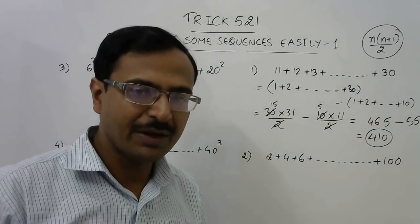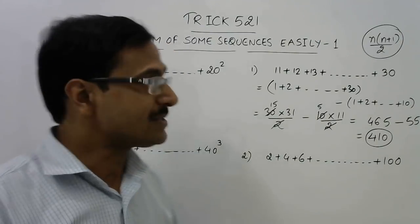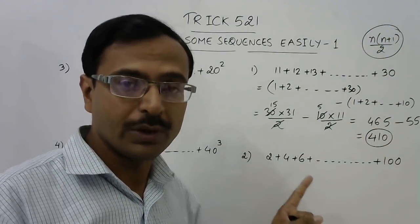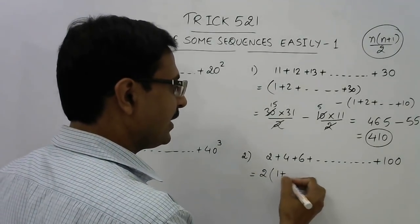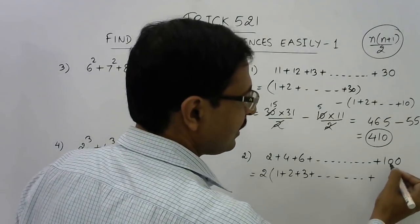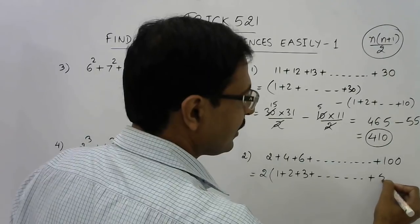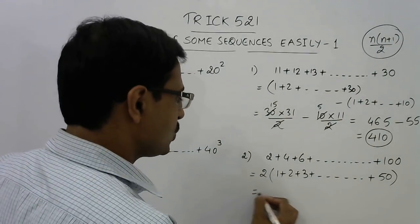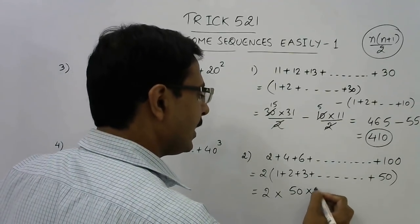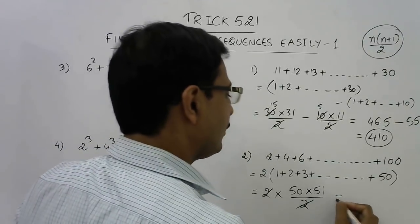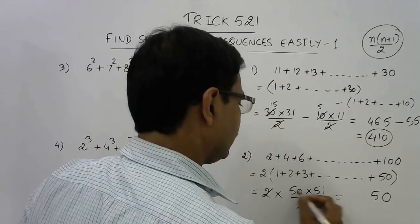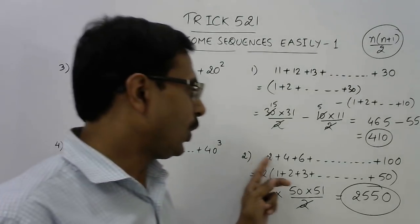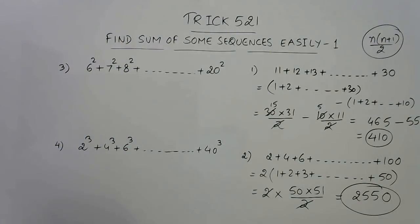Likewise, here we have all even numbers. Whenever we have even numbers we have a few different methods to add them, but if you want to use this formula, take the common factor 2 out. What is left behind are the natural numbers, and if you take 2 out from the last term 100, that gives 50 as the last term. Now apply the same formula again: 2 × (50 × 51 / 2). The 2 cancels out and you get 50 × 51 = 2550, which is the sum of all even numbers up to 100.